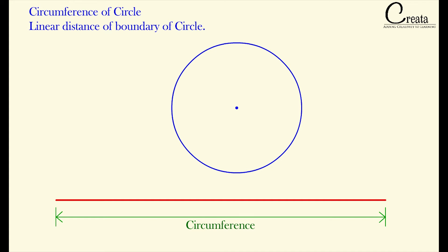We can use a thread or a wire to measure circumference of a circle. Just we have to measure the length of the boundary that will be the circumference of the circle.